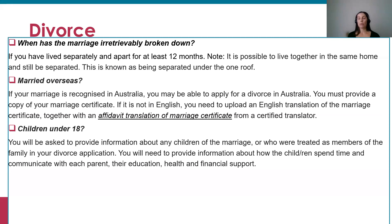If you were married overseas and are living in Australia, you may still be able to apply for a divorce here if you or your spouse regard Australia as your home and intend to live here indefinitely, are an Australian citizen by birth, descent, or grant of citizenship, or have ordinarily lived in Australia for the last 12 months. When applying for a divorce, you will need to provide information about any children under 18, including how much time they spend with the other parent, their education, health, and any financial support they receive.